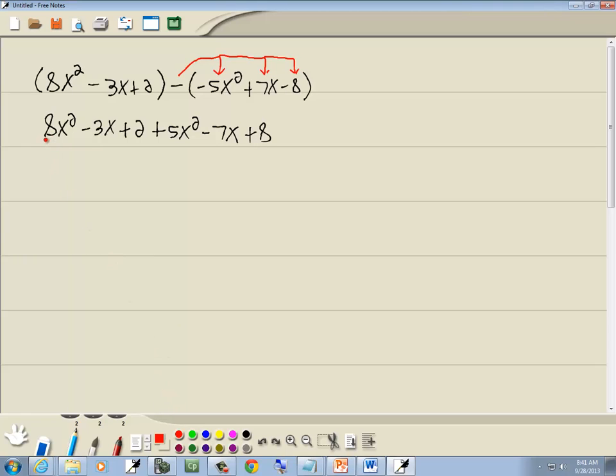Then we want to combine like terms. Like terms have the same variable to the same power. So here's x's second power. Now, to combine like terms, you add or subtract the numbers that are out in front. So 8 plus 5 gives us 13x².